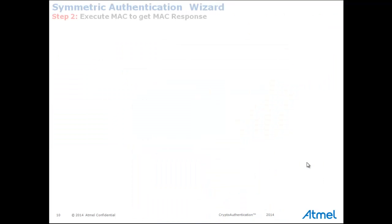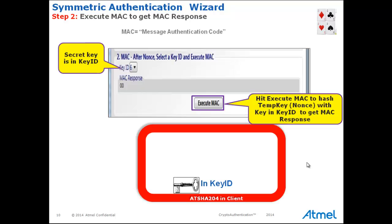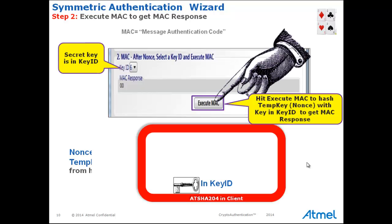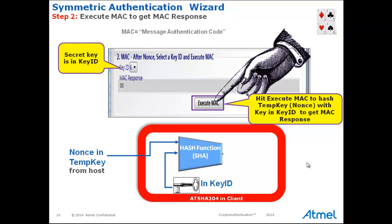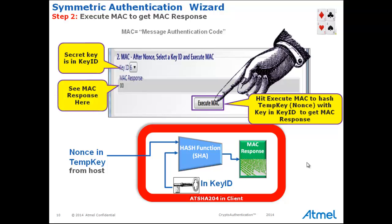Step two of the wizard is the Execute MAC function, which is used to get the MAC response. MAC means Message Authentication Code. When the Execute MAC button is hit, the NONCE stored in TempKey, sent over from the host, is then hashed with the secret key of the client that is stored in the key ID. That operation creates the MAC response.